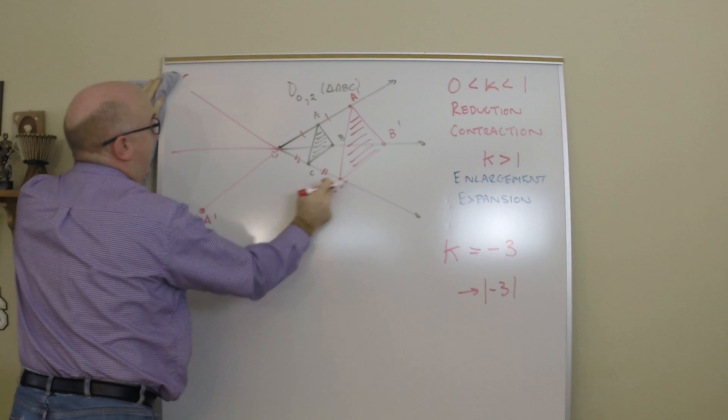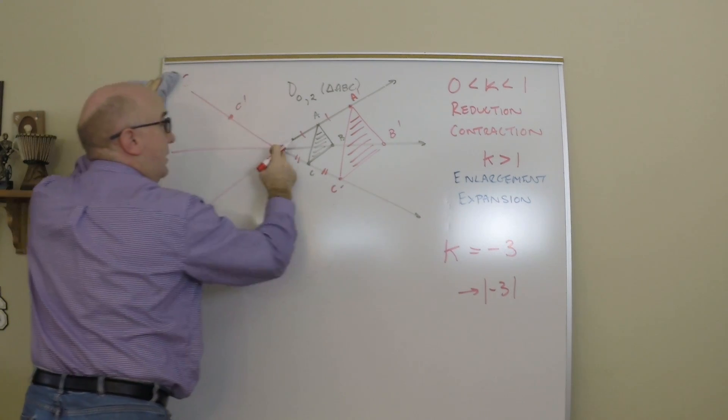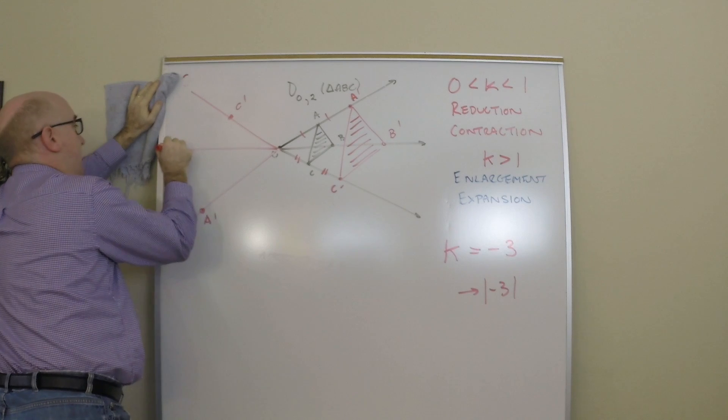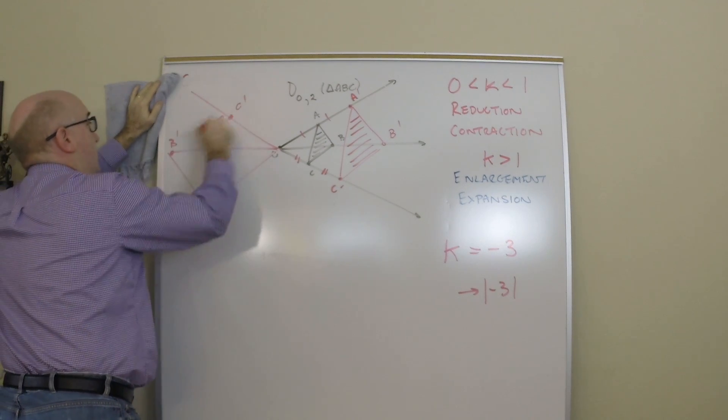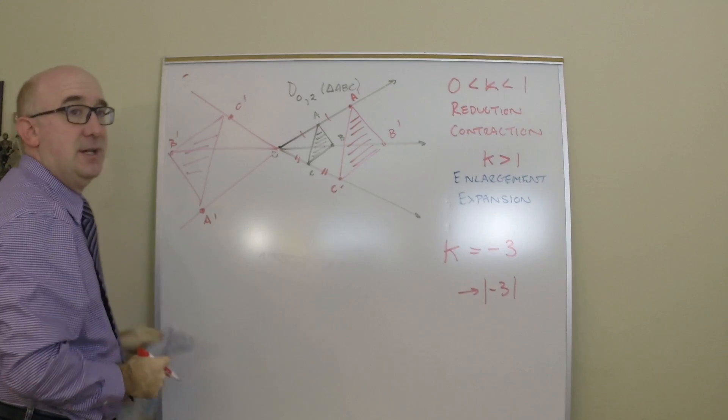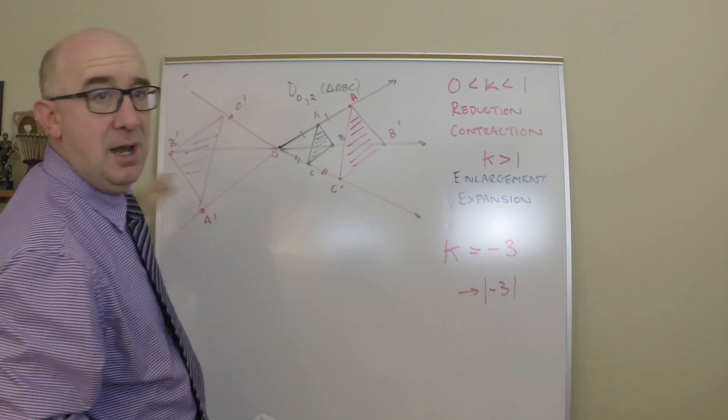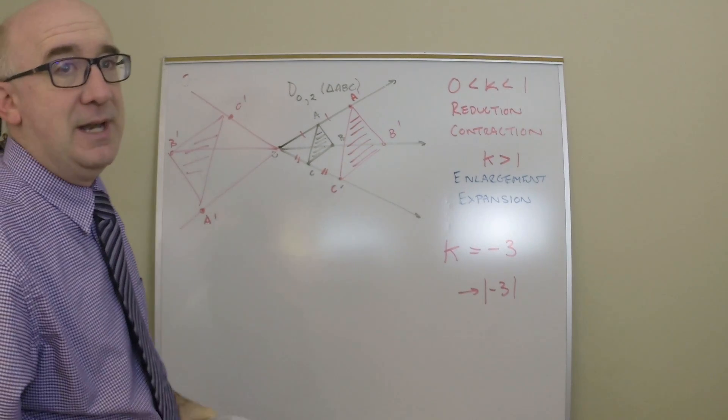So A prime would be out here, C prime would be here, and B prime would be here. And you go in the opposite direction. Do you see how the negative takes you out the opposite rays as it should?